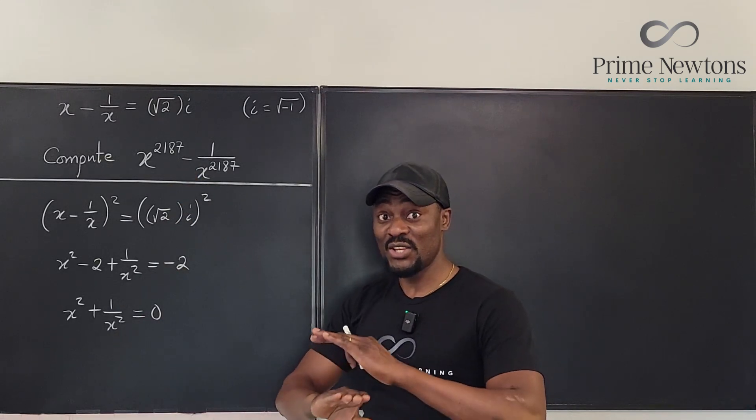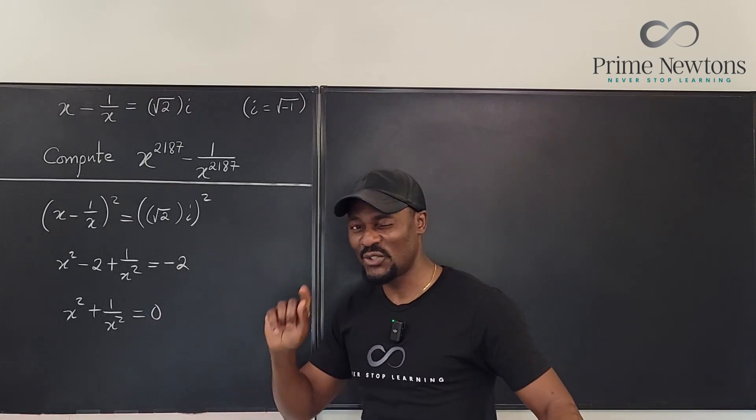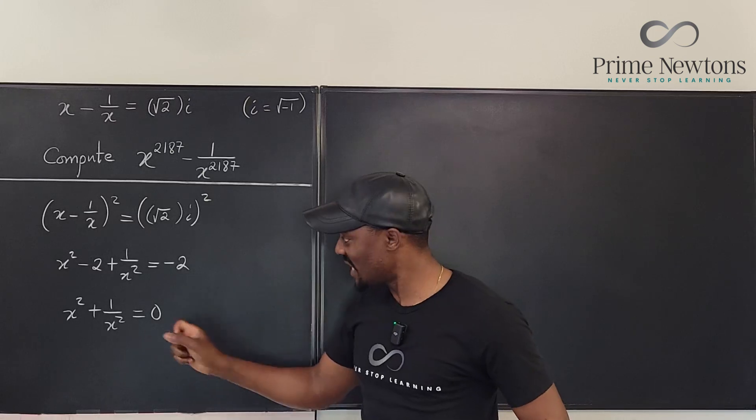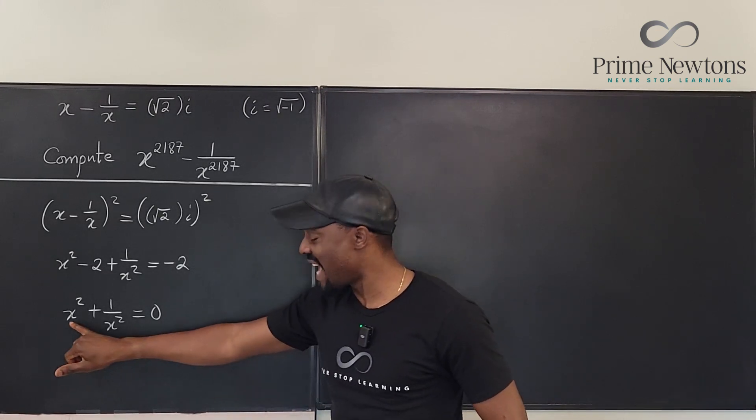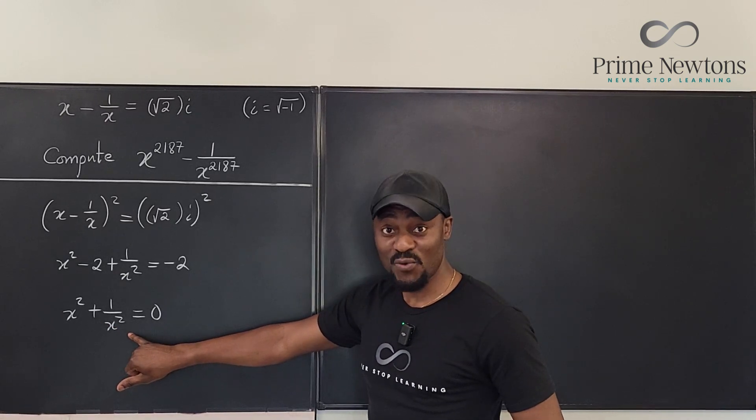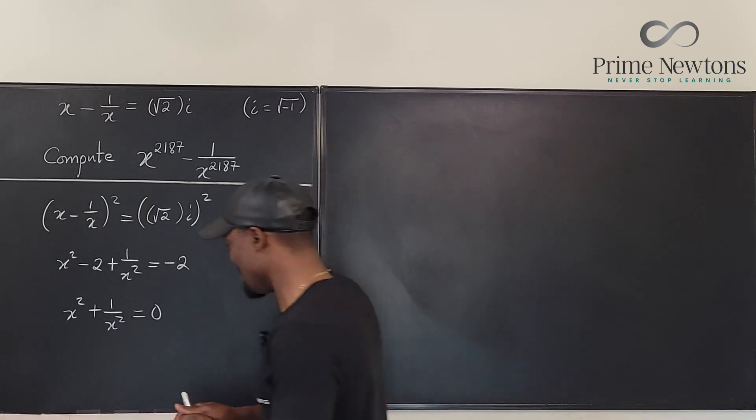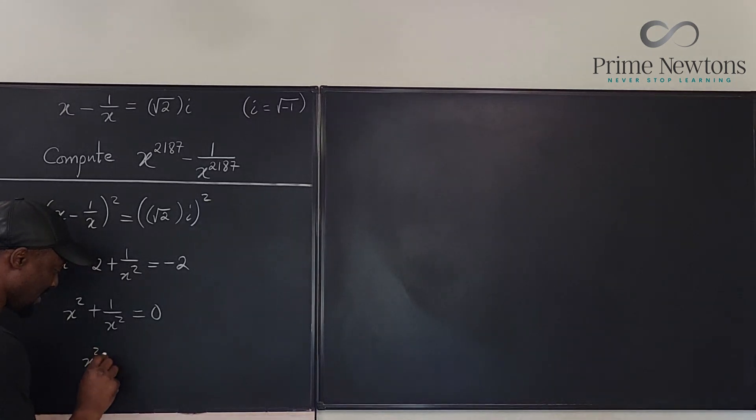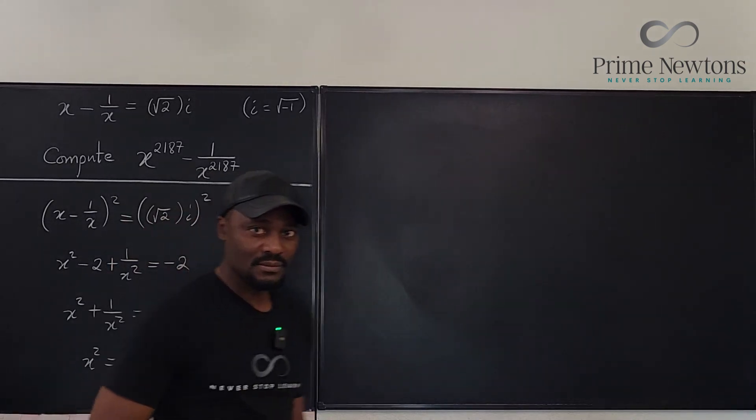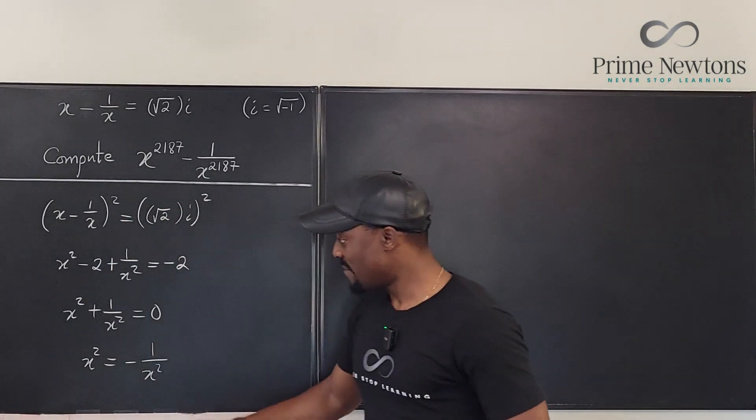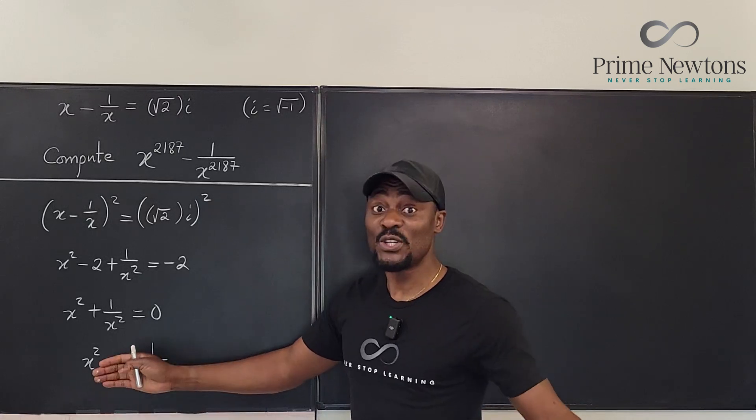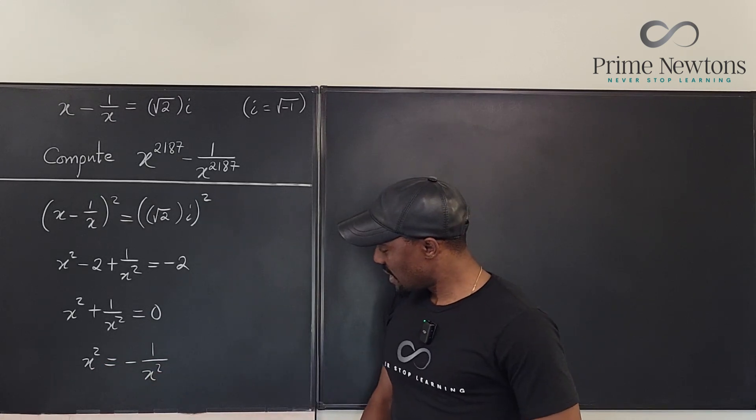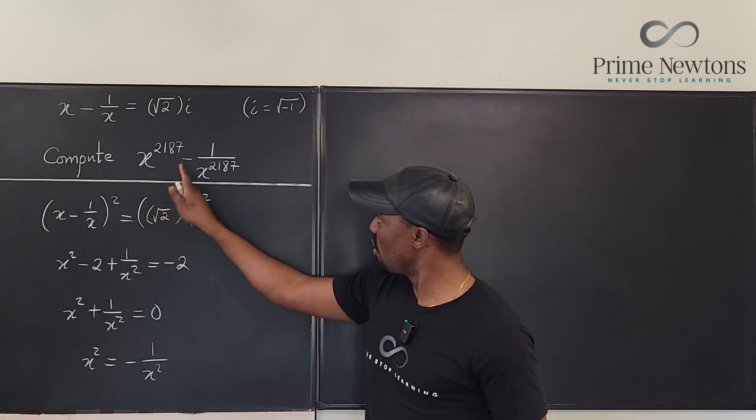Now this could actually stall your progress unless you think again. This is actually better than what you're expecting because now you can write x squared in terms of 1 over x squared. Look, if you move this over to the side, you get x squared is minus 1 over x squared. So a lot of manipulation can be done on this basis. What do you do? This minus is not helping us, and because where we're going is very far—we have to raise this to many powers—so I would square both sides.